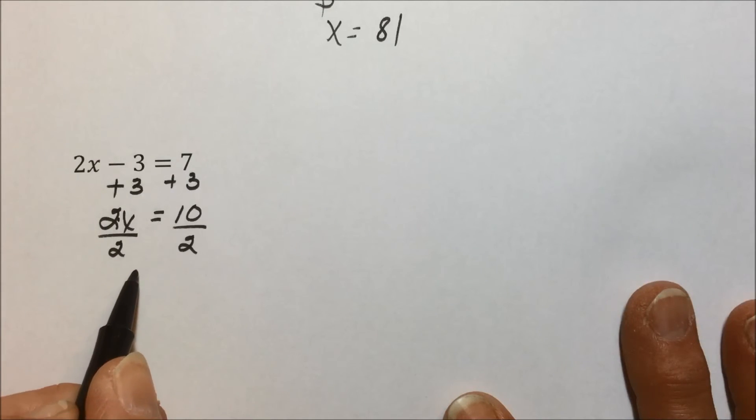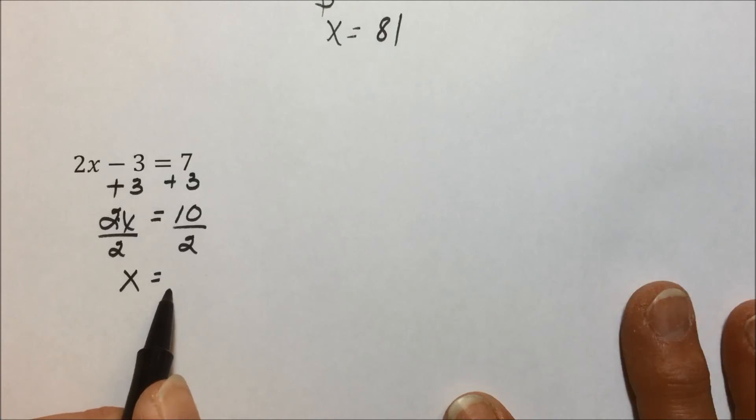And now, the only thing that's happening to the variable's multiplication, we'll divide both sides by 2. 2 divided by 2 is 1, 1 times x is 1x, and 10 divided by 2 is 5.